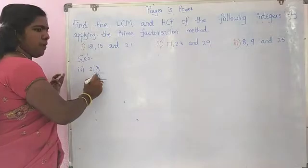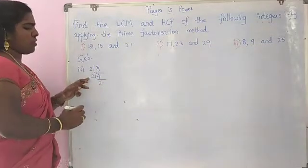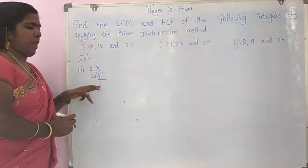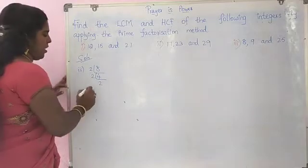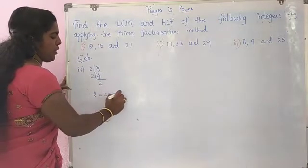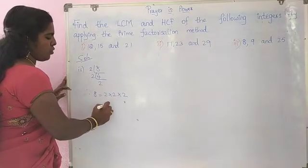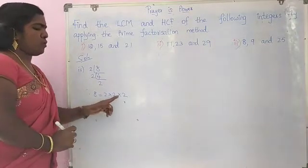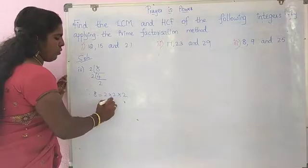Again 4 is reduced by 2: 2, 2 sub 4. 2 is the prime number so we stop this process. Therefore, 8 is equal to 2 into 2 into 2, which means 2 cube.